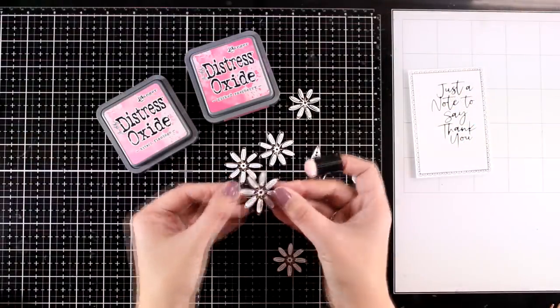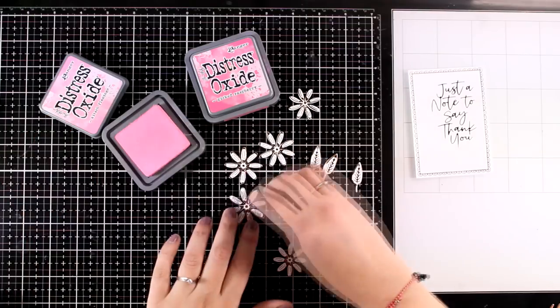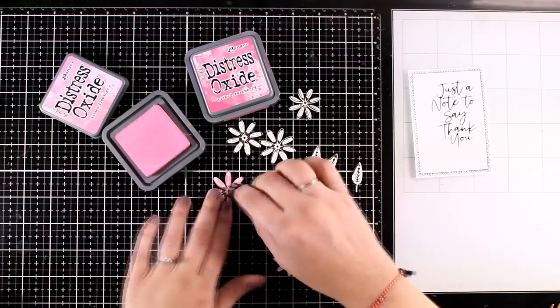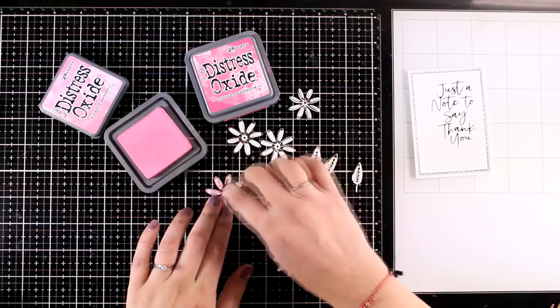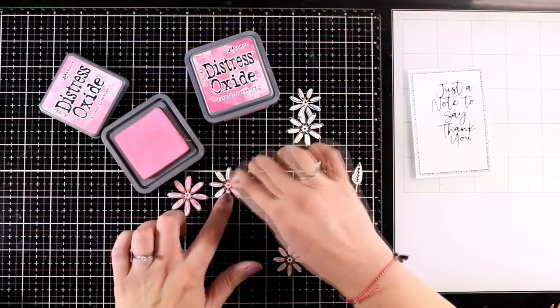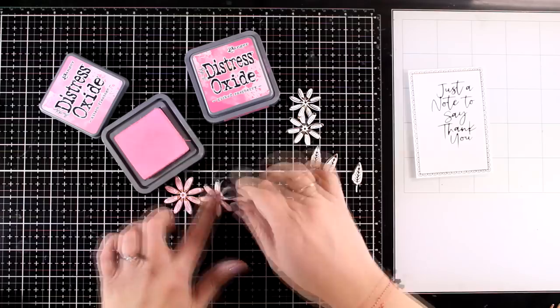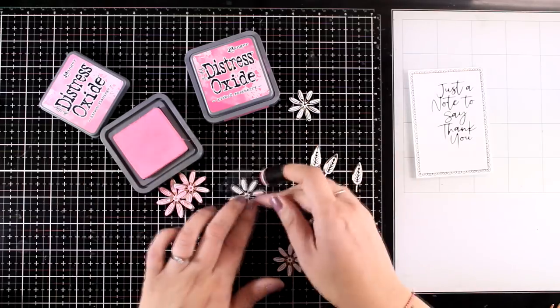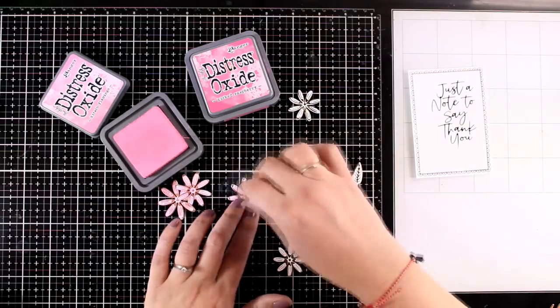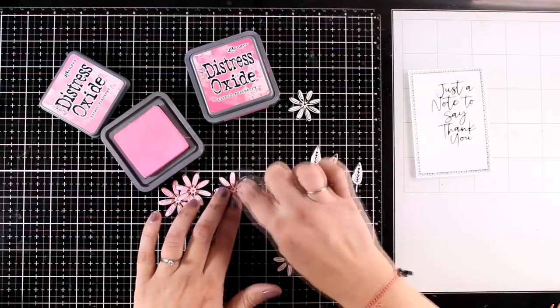Since I die cut everything from white cardstock I am going to add some color with ink blending. I will go with Distress Oxides here and I started with Kitsch Flamingo which is the lighter color for my flowers.